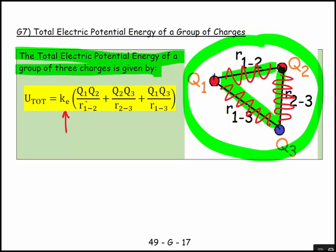It would be ke, and now it's potential energy, so it's Q1 Q2 over r12 and Q2 Q3 over r23 and Q1 Q3 over r13.